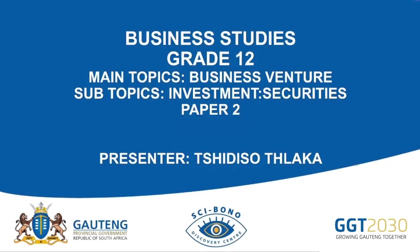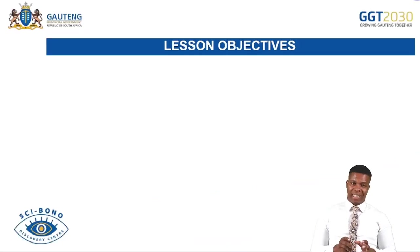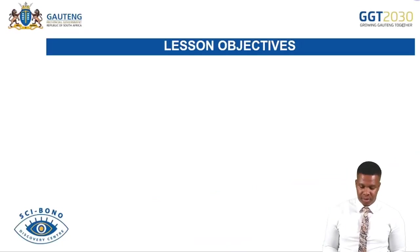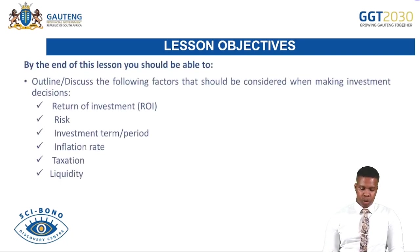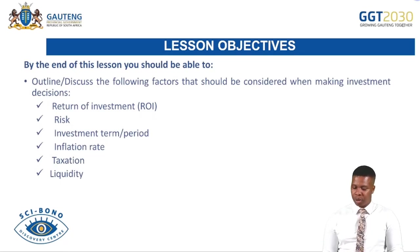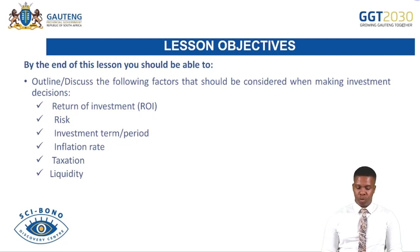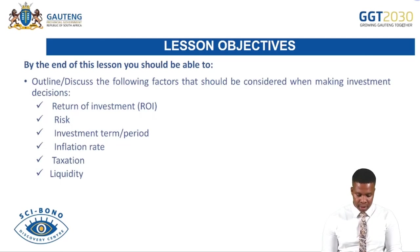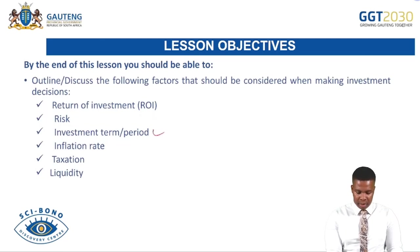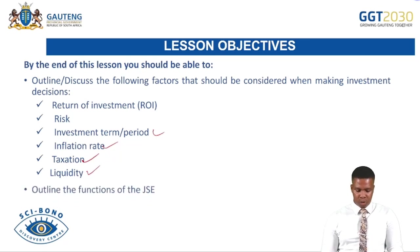This will be taught to you in term two. By the end of this lesson you should be able to outline or discuss the following factors that should be considered when making an investment decision: return on investment, risk, investment term, inflation rate, taxation, and liquidity. You should further be able to outline the functions of the Johannesburg Securities Exchange.